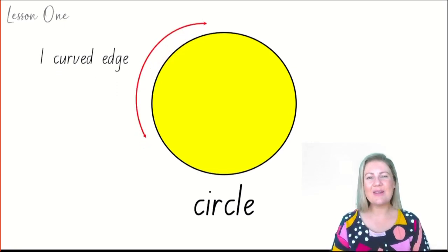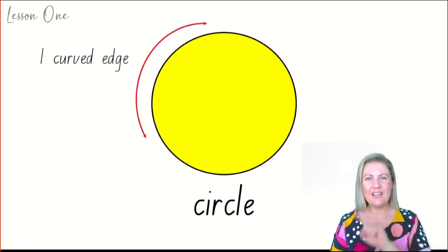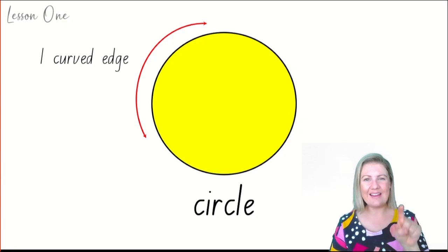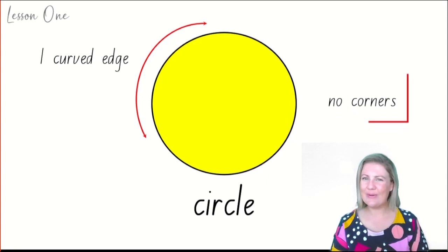A circle has one curved edge. If you use your finger in the air, pretend you're going around the edge of a circle. It's curved. It doesn't have any straight lines. It has a curved line. It has no corners. This is what a corner looks like.